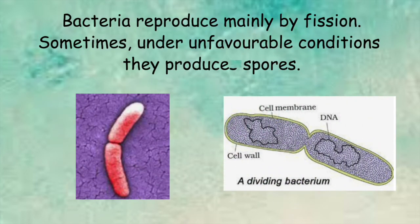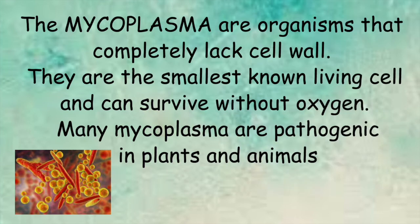Bacteria reproduce mainly by fission. Sometimes, under unfavorable conditions, they produce spores. The mycoplasma are organisms that completely lack a cell wall. They are the smallest known living cells and can survive without oxygen. Many mycoplasma are pathogenic in plants and animals.